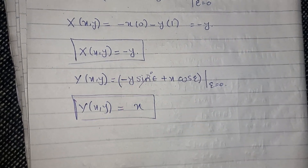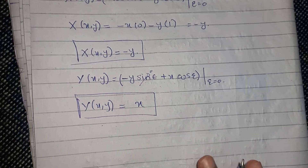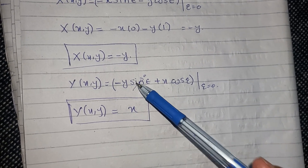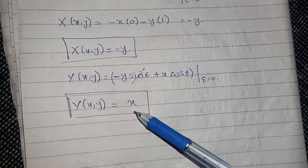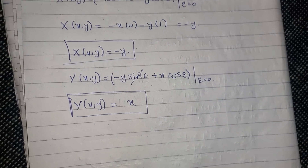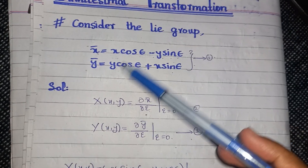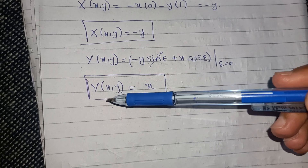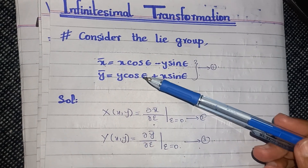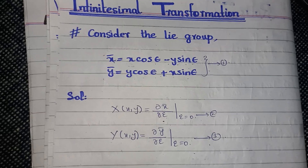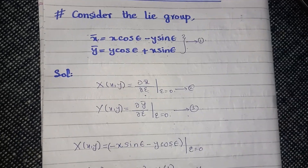In the next lecture we will discuss that if we are given the infinitesimals X and Y, we can recover the Lie group from which they came. Here we were given the Lie group, but if we are only given X and Y, we can also recover this Lie group — we will see that in the next lecture. Thank you so much.